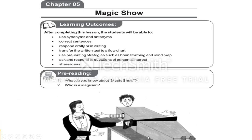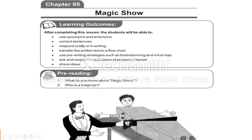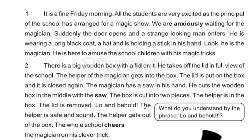There is a big wooden box with a lid on it. A lid is a cover or hinge on top of the box. He takes off the lid — that is, he removes it — in full view of the school audience. Then the helper of the magician gets into the box.